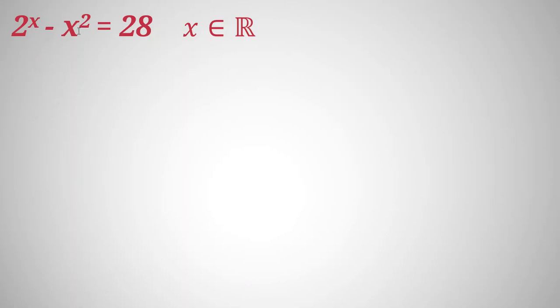We have the equation 2 to the x minus x squared equals 28, where x is a real number. We want to find all possible values of x.